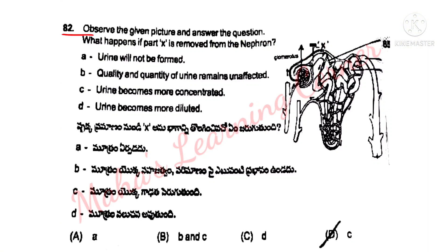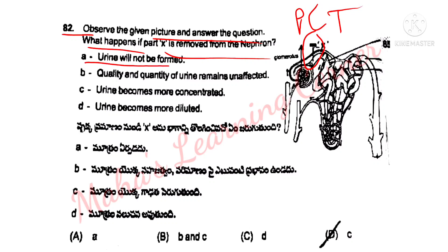Next, observe the given picture and answer the question. What happens if Portex is removed from the nephron? Portex means PCT — Proximal Convoluted Tubule. Options: A. Urine will not be formed. B. Quality and quantity of urine remains unaffected. C. Urine becomes more concentrated. D. Urine becomes more diluted.